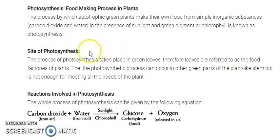If we break the word 'photosynthesis' into two parts: 'photo' means light, and 'synthesis' means to prepare or combine. So photosynthesis means preparing food in the presence of light. Just as we broke down 'autotrophic' into 'auto' and 'tropic', and 'heterotrophic' into 'hetero' and 'tropic', breaking terms into smaller parts helps you understand them more easily.